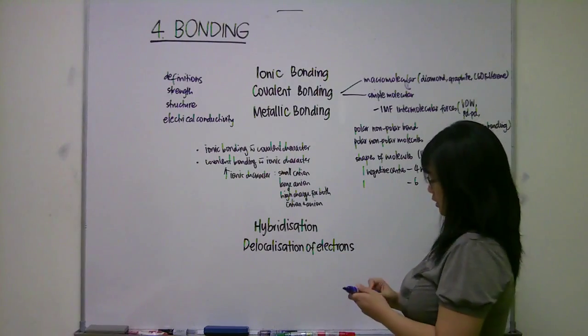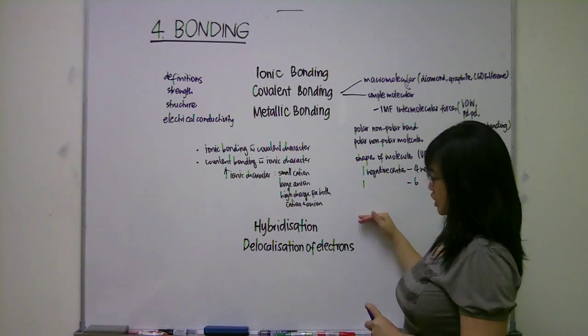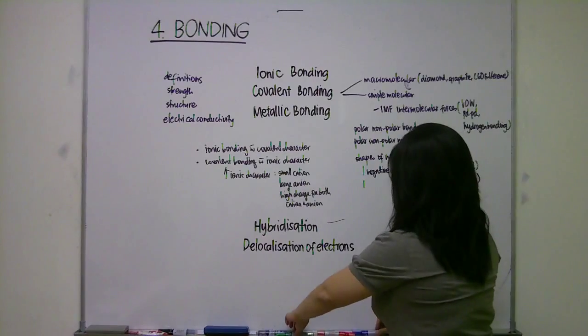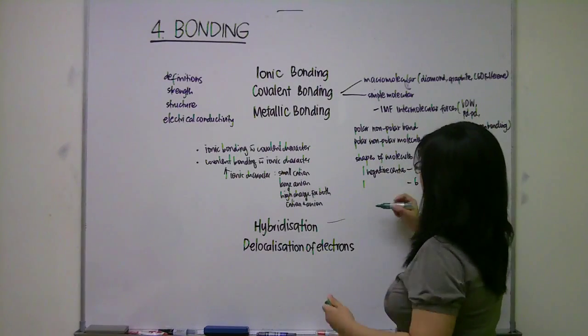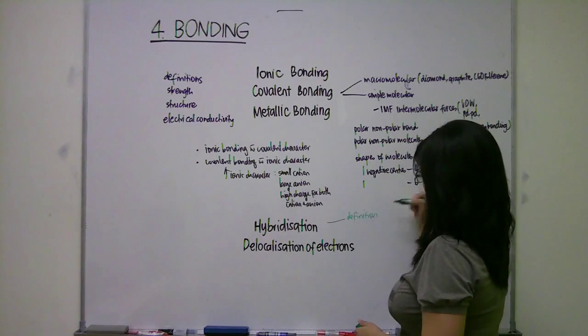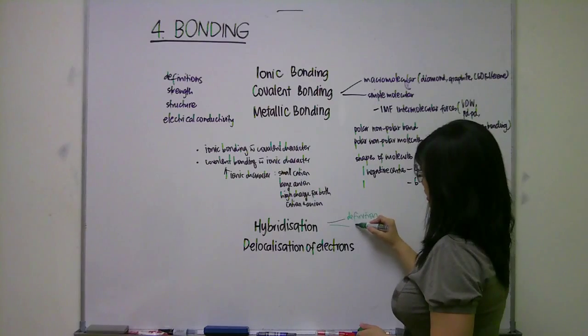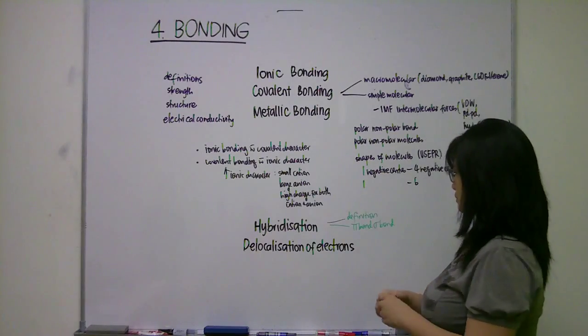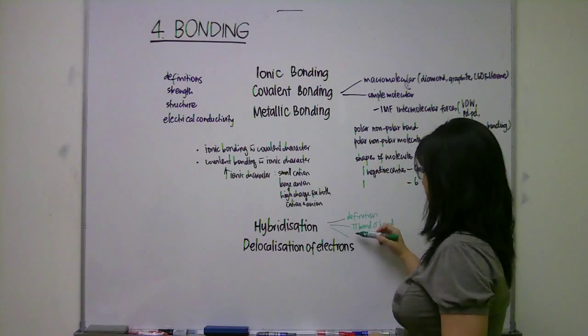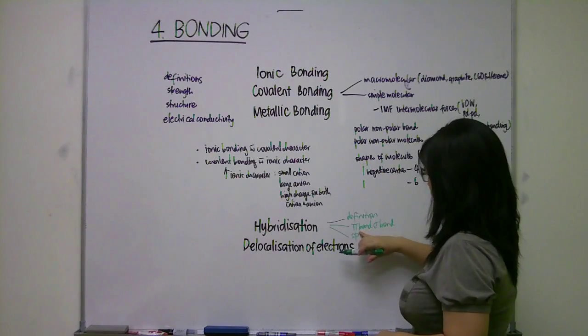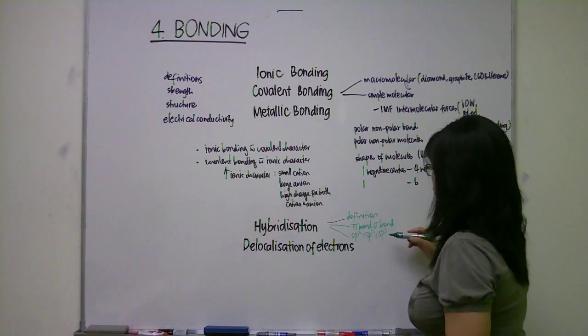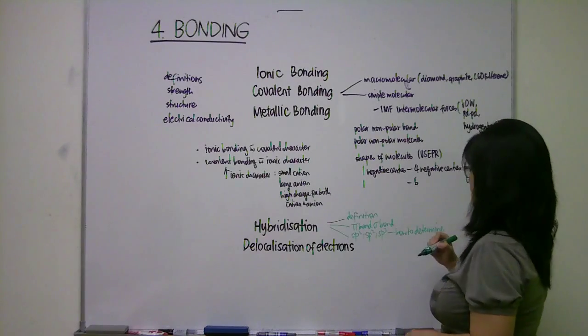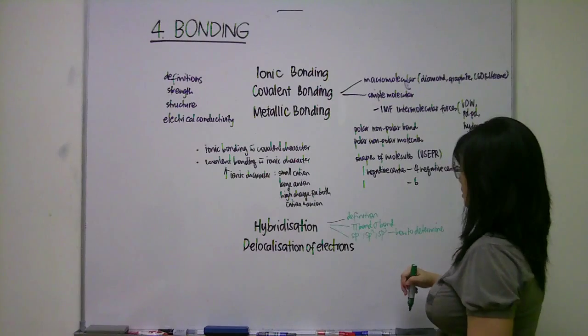And for HL, you need to discuss about hybridization and delocalization of electrons. So here you have to discuss the definition and about pi bond and sigma bond. You need to explain about hybridization and then how you can determine whether you have SP, SP2, or SP3 hybridization.